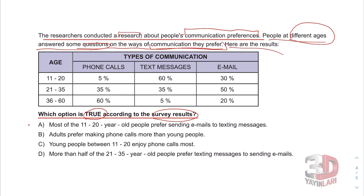Let's read A. Most of the 11-to-20-year-old people prefer sending emails to texting messages. Mail göndermeyi tercih ediyorlar mesaj atmaya. Let's see — for ages 11 to 20: texting messages 60%, email 30%. So they prefer texting messages to sending emails, not sending emails to texting messages. Tam tersi — this is not true.